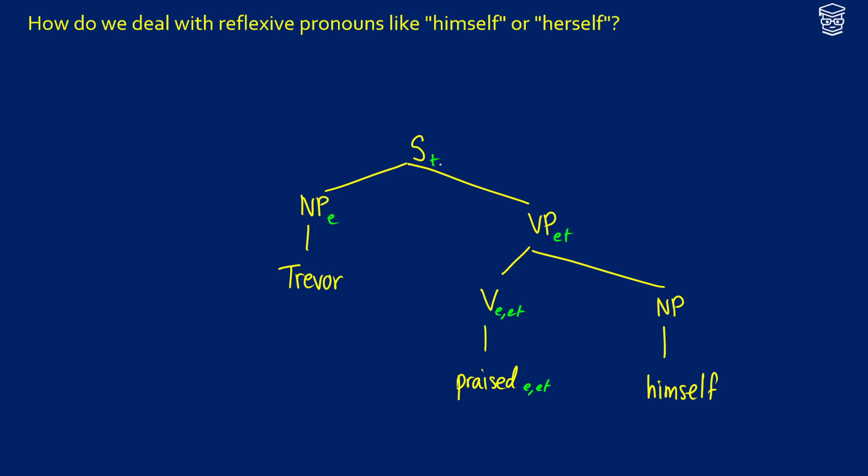Now, when it comes to himself, this isn't really just an entity. So if we establish that this is just E, we're going to get a type match, and we're going to get the ET out of it. But how are we going to connect Trevor with himself? So actually, there's another way that we can look at this puzzle.